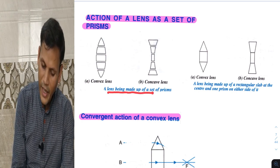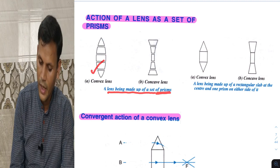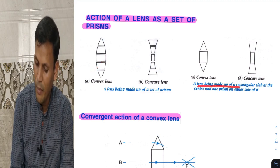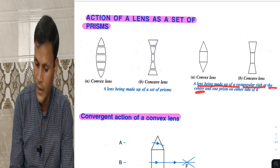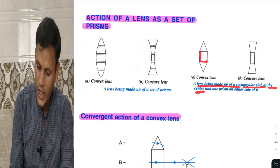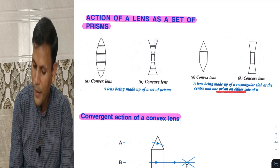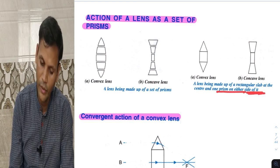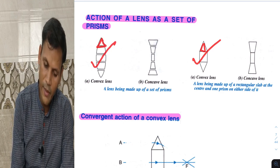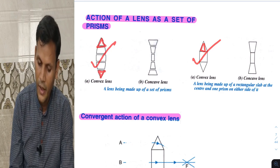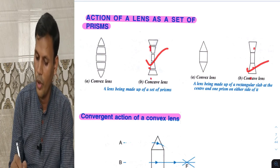The lens being made up of a set of prisms, and a lens being made up of a rectangular slab at the center with one prism on either side of it — these describe how the lens structure is formed.